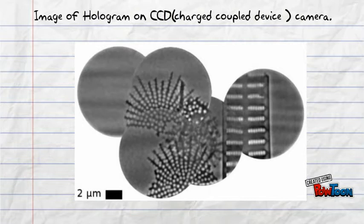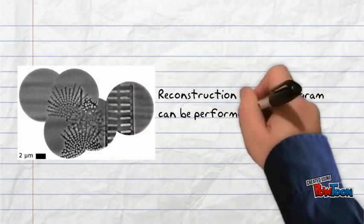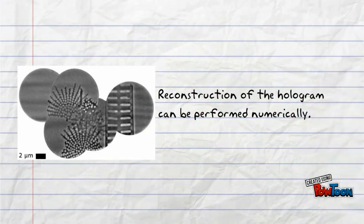The hologram is recorded on a charge coupled device camera. This camera records the interference pattern of the reference wave and the object wave. Since the interference pattern is recorded on the CCD camera, the reconstruction of such a hologram can be performed numerically.